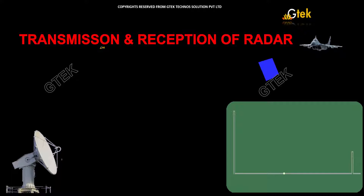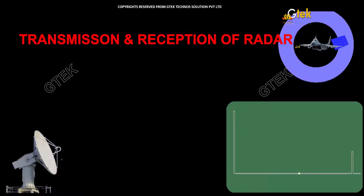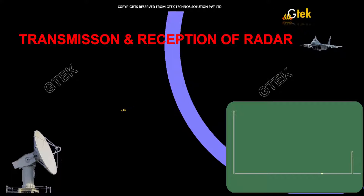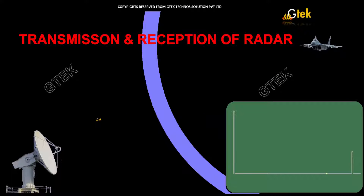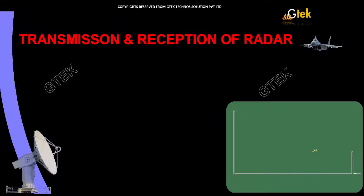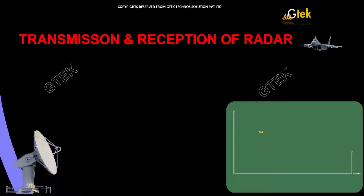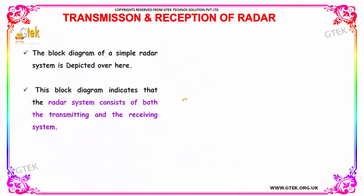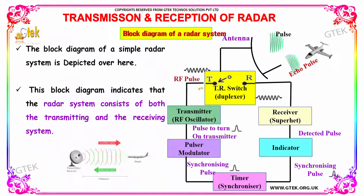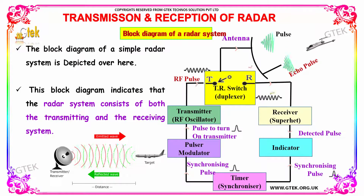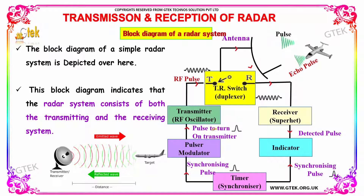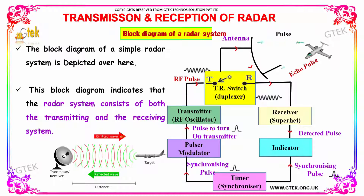Let's talk more about the transmission and reception of radar. Here is the block diagram of a radar system. The block diagram indicates the radar system consists of both the transmitting and receiving system.